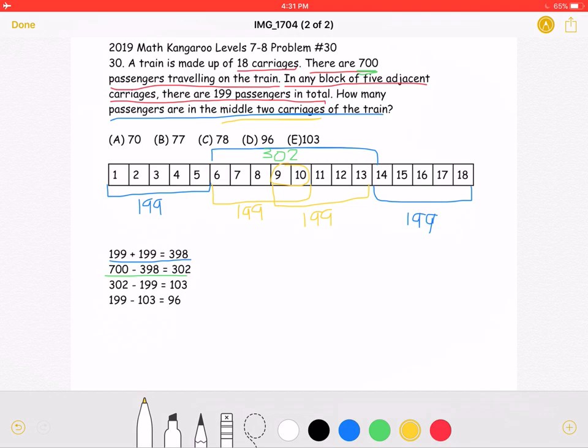To do this, we can take 302, the total number of people in these 8 carriages, and subtract 199 for a total of 103.